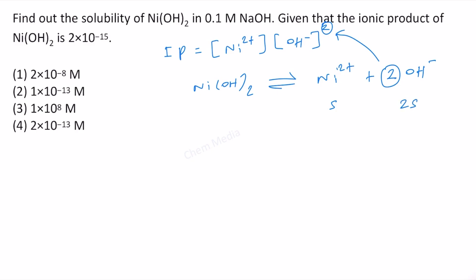The overall concentration of OH minus comes from two different sources here because of the common ion effect. We get OH minus from nickel hydroxide and we also get OH minus from NaOH.